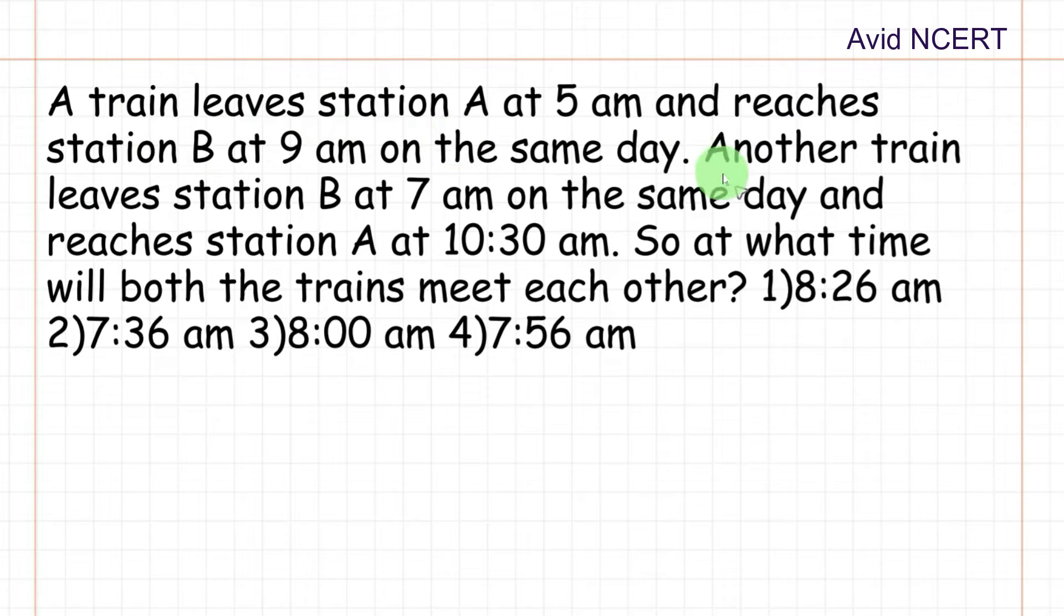A train leaves station A at 5 a.m. and reaches station B at 9 a.m. on the same day. Another train leaves station B at 7 a.m. on the same day and reaches station A at 10:30 a.m. So at what time will both the trains meet each other?